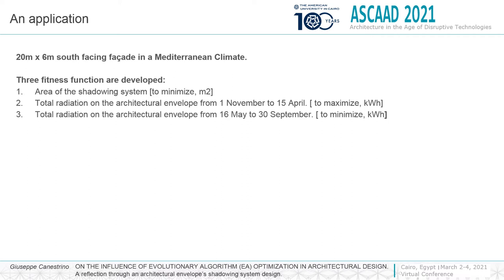The case study regards the design of a 20 by 6 meters south-facing facade in a Mediterranean climate. The shadowing system consists of a wooden cladding to be made with a CNC cutting machine and to be designed with a generative algorithm written in Grasshopper. The toolset is completed by the plugins Wallacei's EA solver and by Ladybug for the radiation analysis.